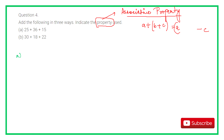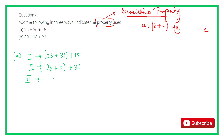For part A, the three ways are: (25 plus 36) plus 15, or 25 plus (36 plus 15) — wait, 25 combined with 15, plus 36 — and third: 36 plus 15 plus 25. In all three ways, the answer is 76. This demonstrates the associative property.